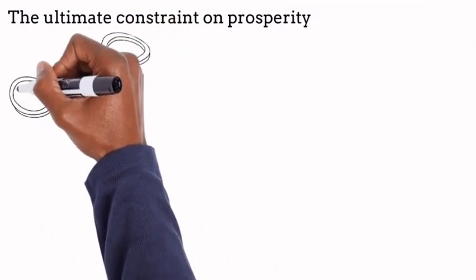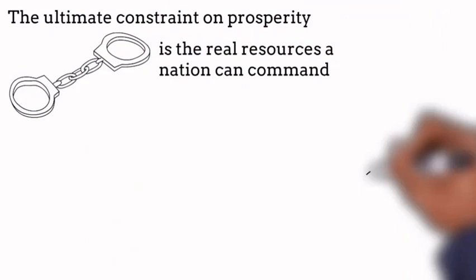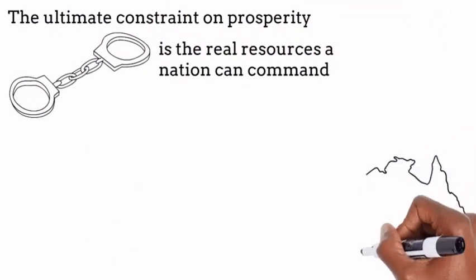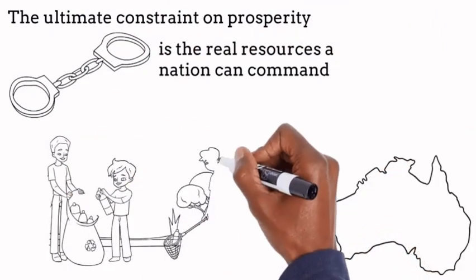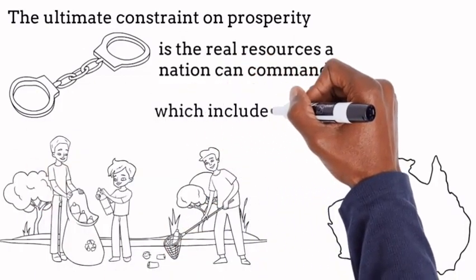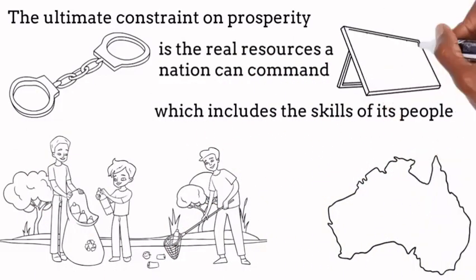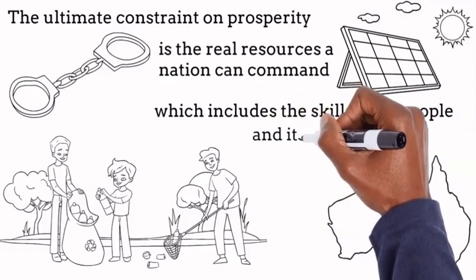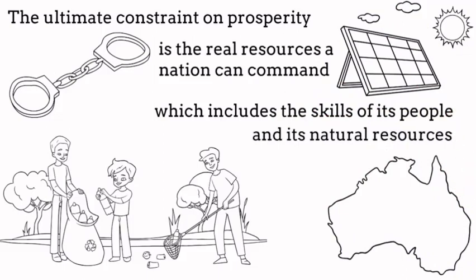The ultimate constraints on prosperity are the real resources a nation can command, which includes the skills of its people and its natural resources — for example, solar power from the sun.